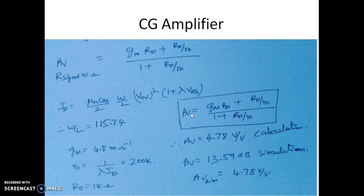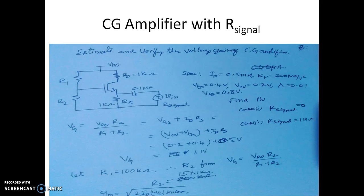Since Rd is equal to 1 kilo ohm we can actually estimate the AV here which comes out to be 4.78 volt per volt which is from the calculation. We shall do the same design using the LTSpice and then try to verify the simulation results.